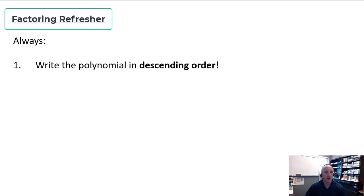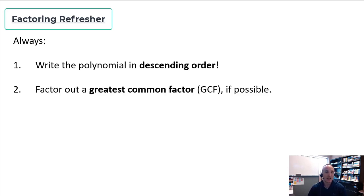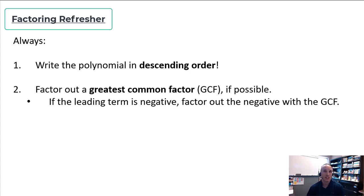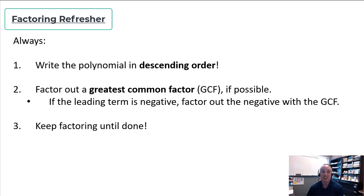The first thing I want to talk about is what you always want to do when you factor. You always want to write the polynomial in descending order from highest power to lowest power. Then, if there's a greatest common factor, factor it out. In particular, if the leading term is negative, factor that negative out with the GCF. Finally, keep factoring until you're done — if something can factor more, keep going.